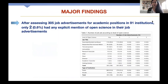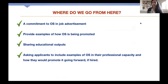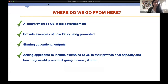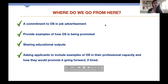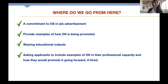So what did we find? After examining 305 job advertisements in academic positions in 91 institutions, surprisingly only two had any explicit mention of open science in their job advertisements. It's clear that institutions need to do more to promote open science if we are to deal with the reproducibility crisis. There are some ways they can address this: they can make a commitment to open science in their job advertisements, provide examples of how open science is being promoted, share educational outputs, and ask applicants to share how they have used open science in their professional capacity and how they will continue to promote it going forward if hired.